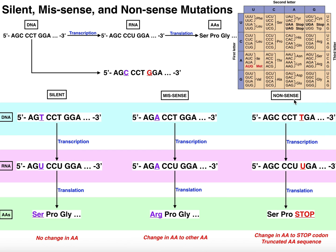If you want a good example of a gene with lots of nonsense mutations, look up the human urate oxidase gene — I'll include a link to one of my videos about this in the description. The urate oxidase gene in humans and other specific higher-order primates has nonsense mutations in it, so humans do not have a functional urate oxidase protein. Hopefully this video made sense and now you can distinguish between silent, missense, and nonsense mutations. Please like my video and subscribe to my channel for future videos and notifications. Thank you.